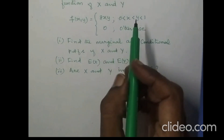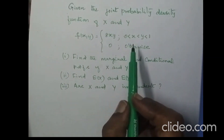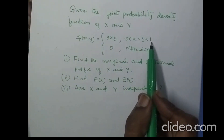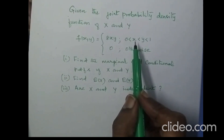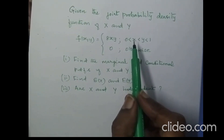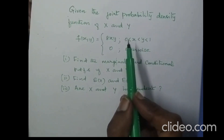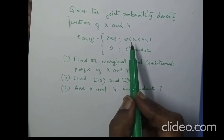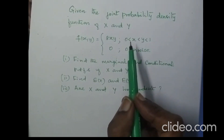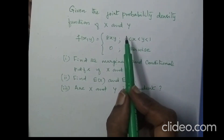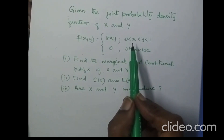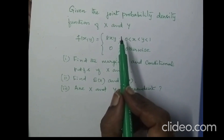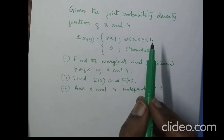In this problem, look at the limits. The limits are given as 0 < x < y < 1. It is not 0 < x, y < 1 where both x and y lie between 0 and 1. Here x and y have dependent limits: x varies from 0 to y, y varies from x to 1, and the outer limits for both x and y are from 0 to 1.